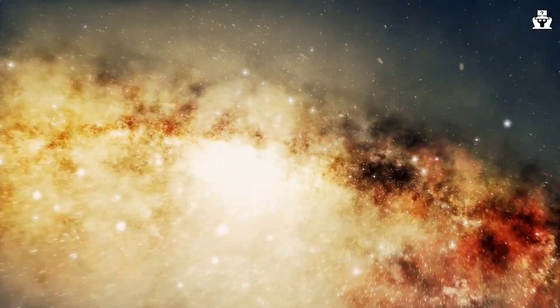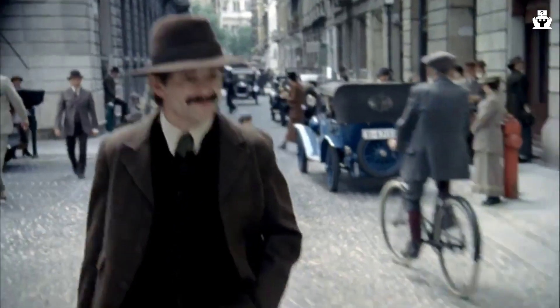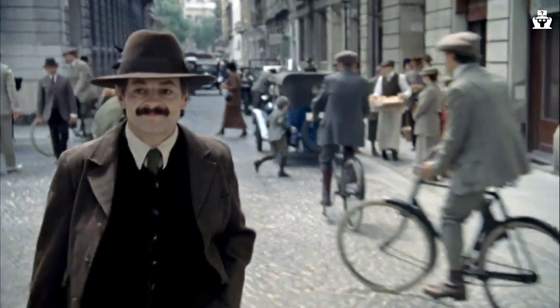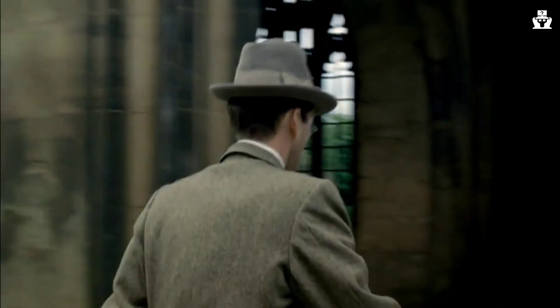Meeting of Einstein and Eddington. Einstein and Eddington first met in 1914 at a conference in Brussels. At the time, Einstein was not yet famous, and Eddington was still a relatively unknown astronomer.